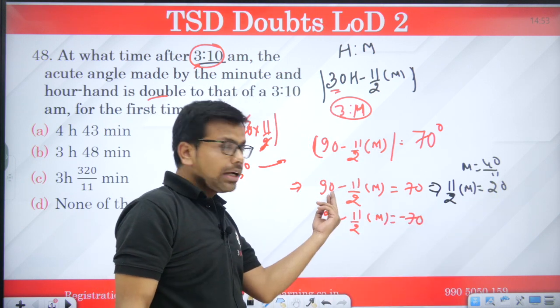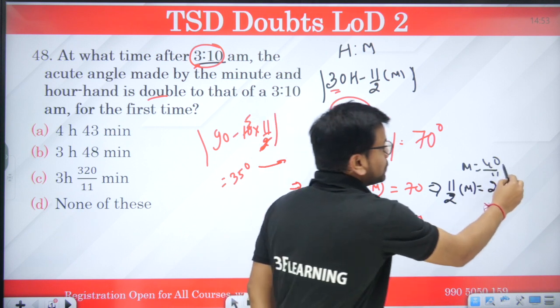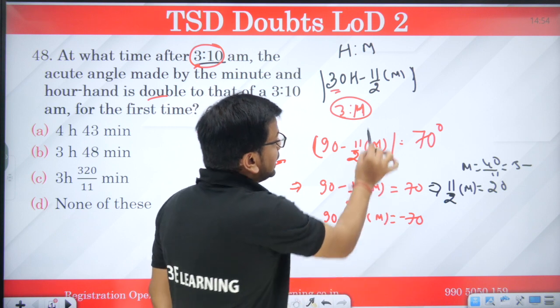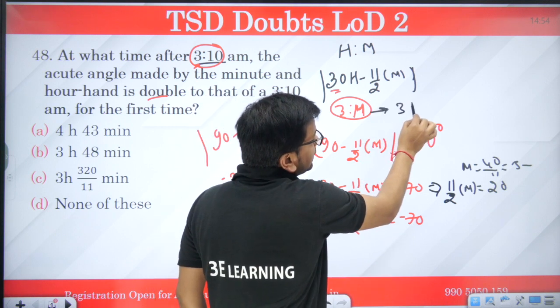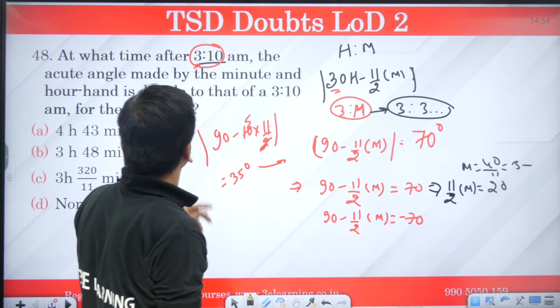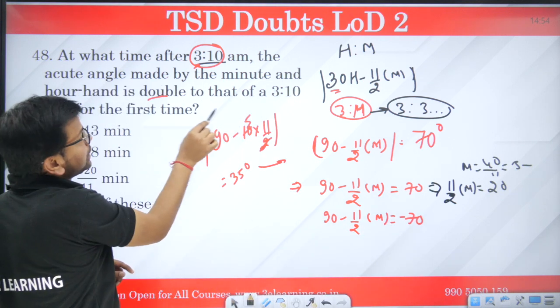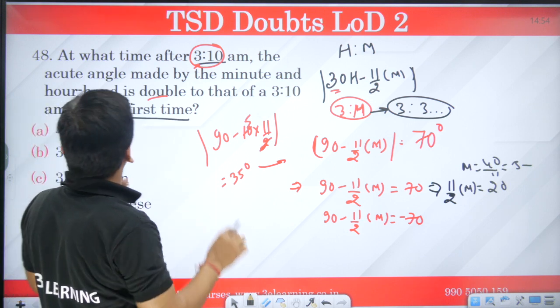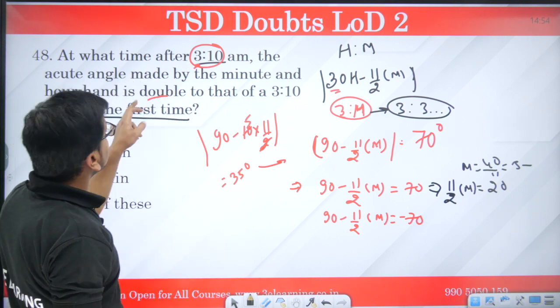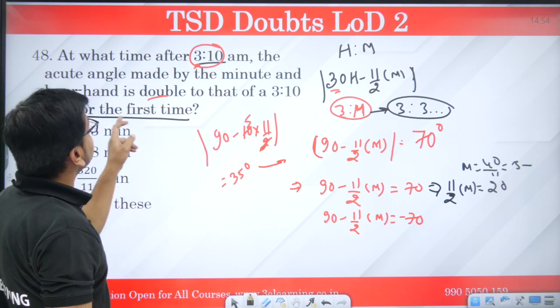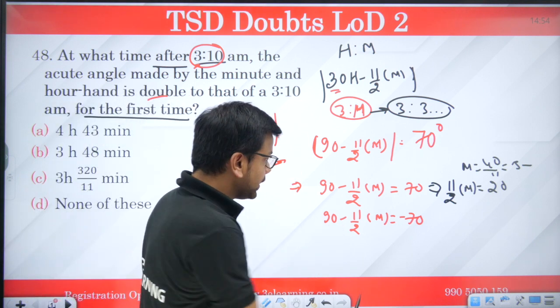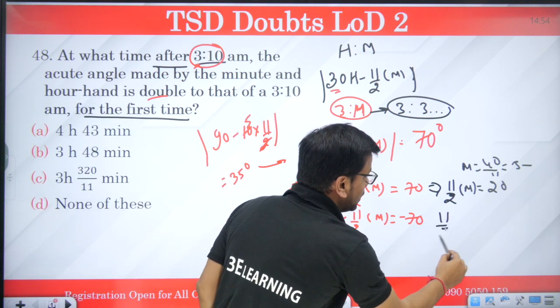That is, m becomes 40 by 11, which is 3 something. That means time would be 3h 3 minutes approx. But the question is the acute angle made by the minute hand and hour hand is double to that of this for the first time. When will this time after? This will not be, so we will solve this here.